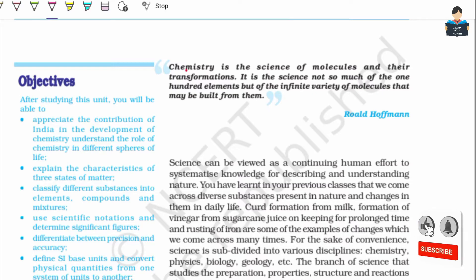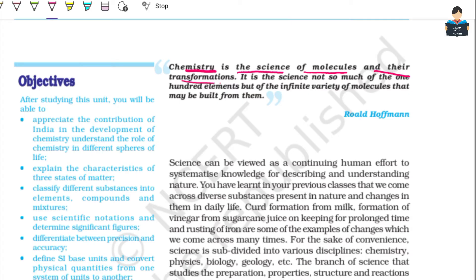Chemistry is the science of molecules and their transformations. It is the science not so much of the one hundred elements, but of the infinite variety of molecules that may be built from them. So chemistry is the science of one hundred elements and the infinite variety of molecules.